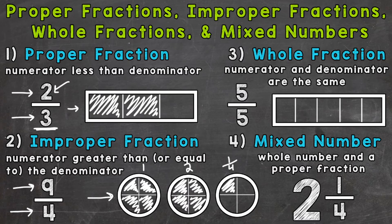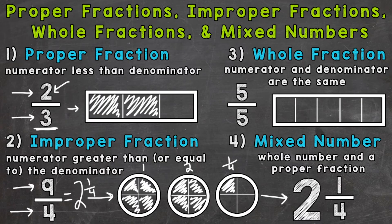I'm going to go out of order and talk about mixed numbers next. That model also represents two and a fourth — nine-fourths is actually equal to two and one-fourth. One is an improper fraction and one is a mixed number. A mixed number is a whole number and a proper fraction. Improper fractions and mixed numbers are equivalent — just a different way of expressing the same value. Mixed numbers help us represent values in between whole numbers, like two and a fourth, which is between two and three. I go into more detail about converting between the two in separate videos linked in the description.